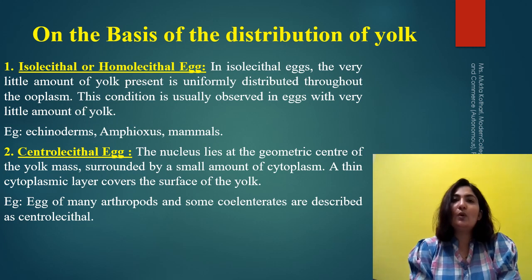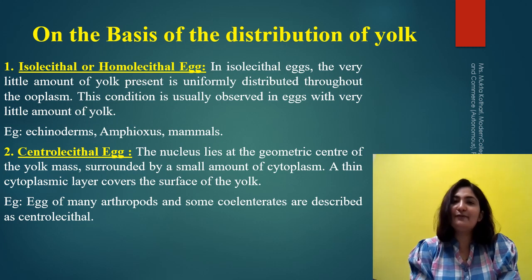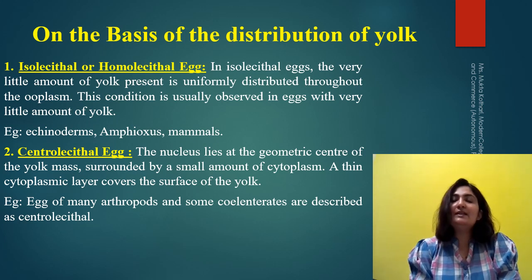Isolecithal or homolecithal eggs generally have a very small amount of yolk which is evenly distributed throughout the egg cell. The best example is the amphioxus egg. Along with that, mammals and echinoderms also show this type of egg.